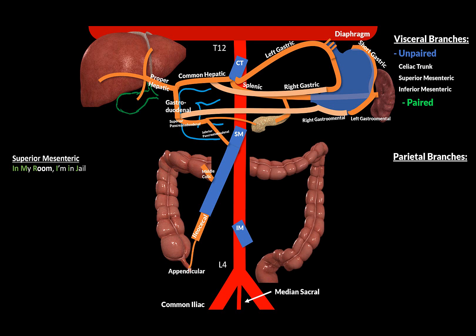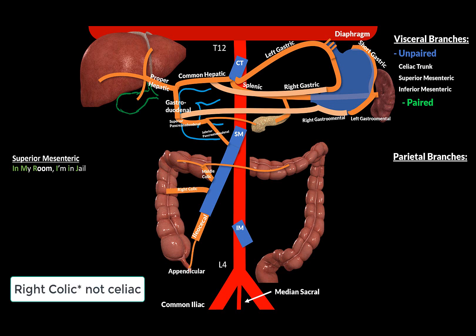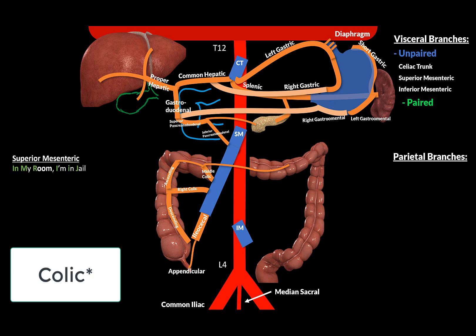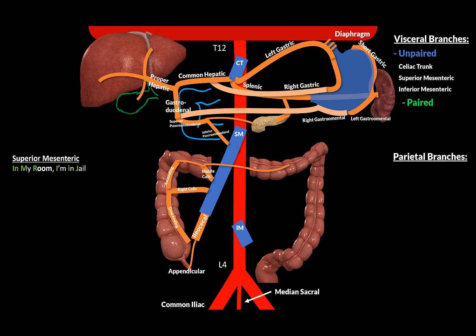M in the mnemonic stands for the middle colic artery, supplying the transverse colon from the right until the left one-third of it, using the right and left branch. R stands for the right colic artery, going towards the middle part of the ascending colon, dividing into ascending and descending branches. The ascending branch anastomoses with the left branch of the middle colic artery, and the descending branch anastomoses with the ileocecal artery. The last two are the ileal and the jejunal arteries — 12 to 18 branches supplying the ileum and the jejunum of the small intestine.